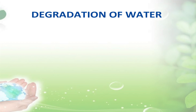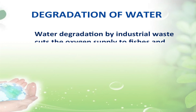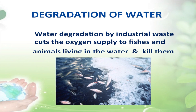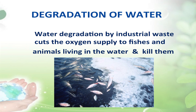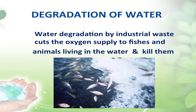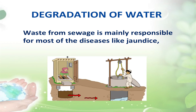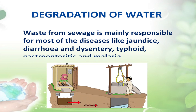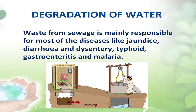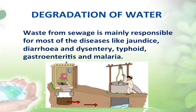Now we will discuss degradation of water. Water degradation by industrial waste cuts the oxygen supply of water and further reduces the oxygen available for fishes and animals living in the water, and eventually they get killed. Waste from sewage is mainly responsible for most diseases like jaundice, diarrhea, dysentery, typhoid, other gastrointestinal diseases, and of course malaria.